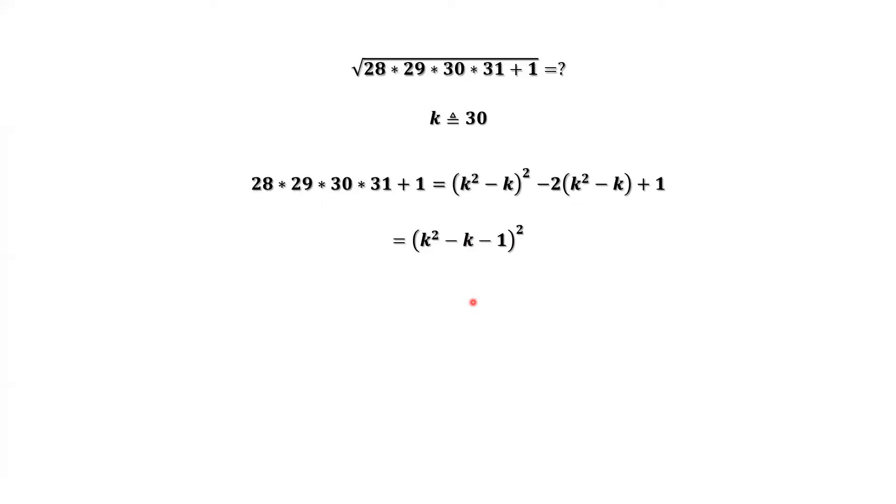What do we have now? The inside part of the square root equals a number square. Put it back under the roof of the square root. Square root and square, we can cancel them. Equals k square minus k minus 1.